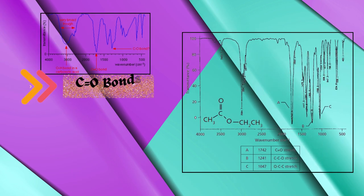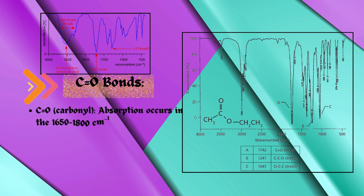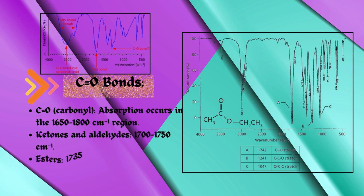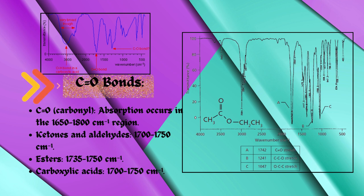Carbon and oxygen double bond CO double bonds or carbonyl group. CO in carbonyl: absorption occurs in the 1650 to 1,800 per centimeter region. Ketones and aldehydes: 1,700 to 1,750 per centimeter. Esters: 1,735 to 1,750 per centimeter. Carboxylic acids: 1,700 to 1,750 per centimeter.